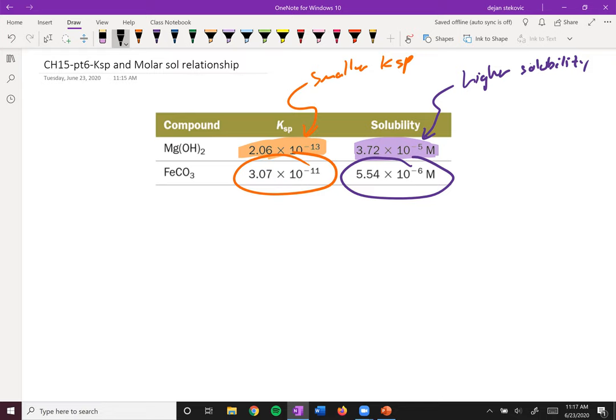And we can think about why that is if we write this KSP here. In this case, this KSP is magnesium 2+ times the concentration of hydroxide squared. Whereas this bottom one is the KSP of the iron 2+ times the carbonate. And so you can tell the big difference here is this squared, right? These two things don't have these, they're not to the same power.